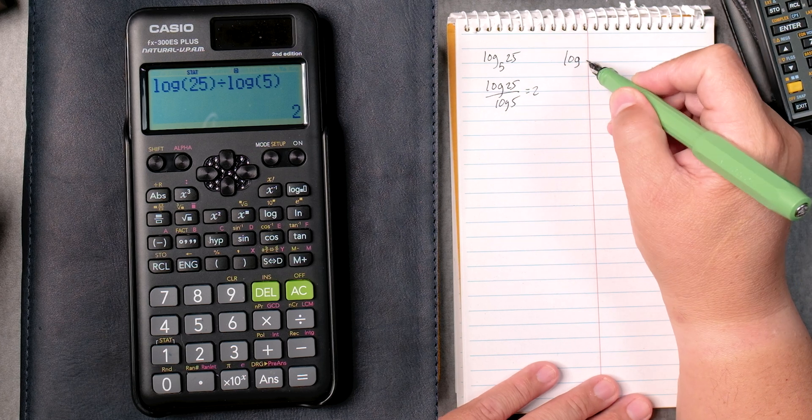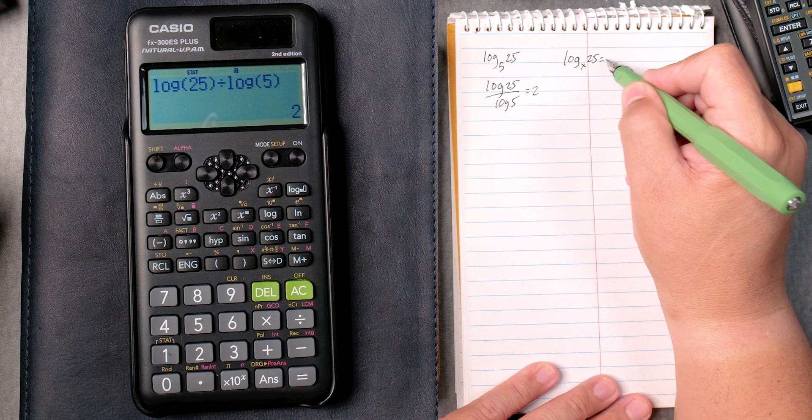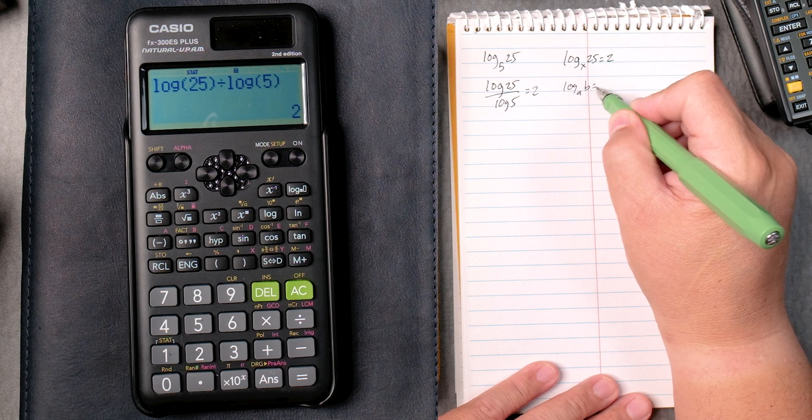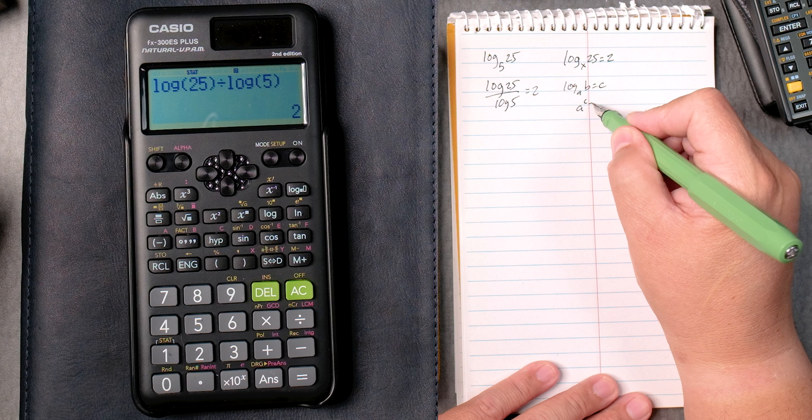Then the log of x, 25, equals 2. There's a rule that says that the log of a, b, equals c, where a, c, equals b.